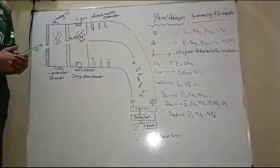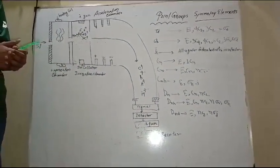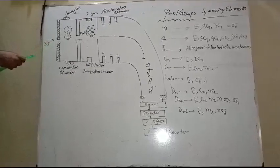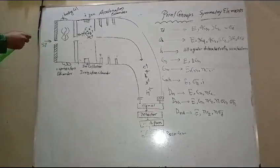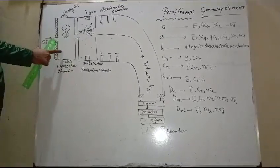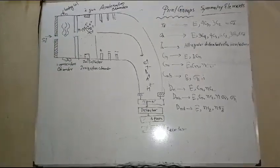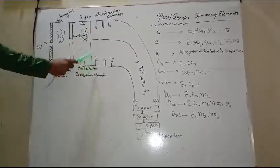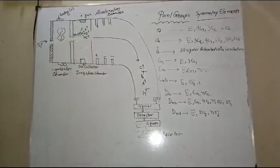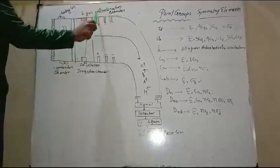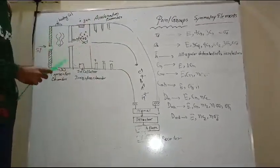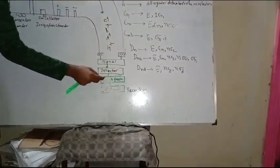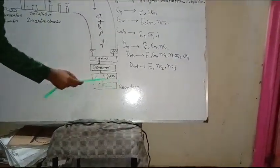In this schematic diagram of the mass spectrometer, in the first part you will be able to see the sample inlet, by means of which you can pass the sample into the vaporization chamber. The next part is the ion collector, followed by the ionization chamber, then the acceleration chamber, and the last part is the signal detector, the amplifier, and the recorder.